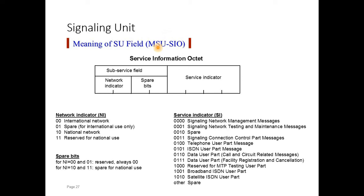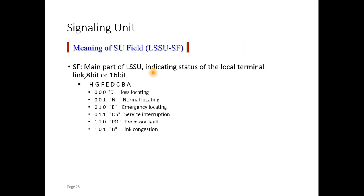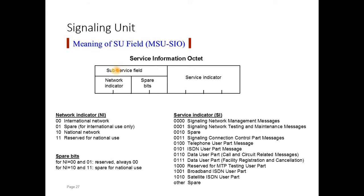Another signaling unit field is the signaling information octet (SIO), carried in the message signaling unit. The SIO has two major parts: the sub-service field and the service indicator. The sub-service field carries network indicators such as international, national, or reserved, while the service indicator part carries parameters like the signaling connection control part (SCCP).